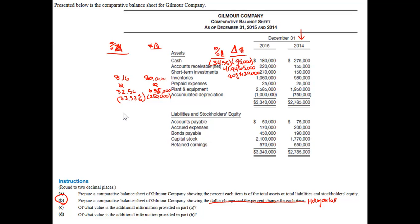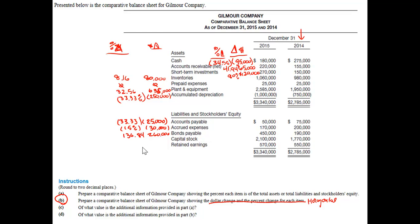Accounts payable decreased $25,000, so $25,000 over $75,000 is 33.33%. Accrued liabilities went down $30,000, or 15%. Bonds payable went up $260,000, a change of 136.84% — so bonds payable took a radical change. Capital stock did increase $330,000, which is an 18.64% increase. But since bonds increased so much more, they kind of overshadowed it. And retained earnings increased $20,000, or 3.64%.